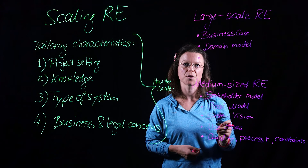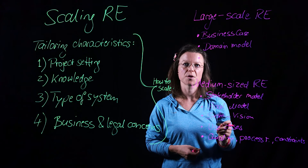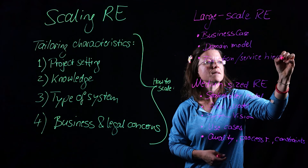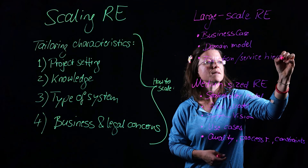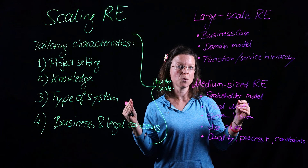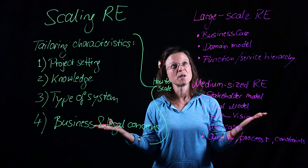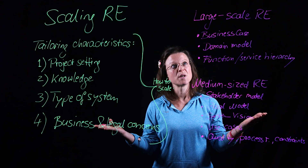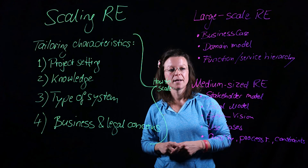Last but not least, we want a function hierarchy or a service hierarchy. That hierarchy is going to give us an overview of the black box functionality of the system, but from the system point of view. The use cases in comparison were still from the user point of view, and this part is then from the system point of view — that is our plugin into the next phase, into the design. So here we have the characteristics that I need to look at to understand how I need to tailor my requirements engineering approach to a specific project, and I gave you a few examples of how that plays out on different levels of complexity. Thank you.